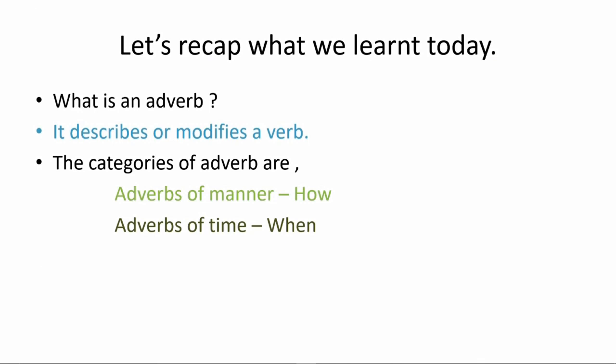Now we have come to the end of our lesson. Let's recap what we have learned today. We learned what an adverb is — it describes or modifies a verb. We learned two categories: type one, adverbs of manner, and type two, adverbs of time. From our next lesson, let's learn the other two types. Goodbye, children.